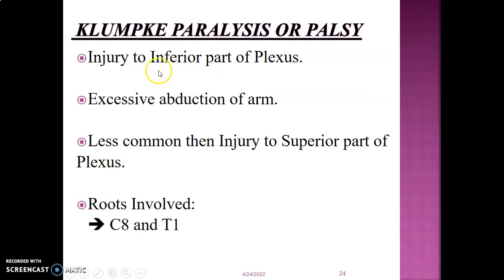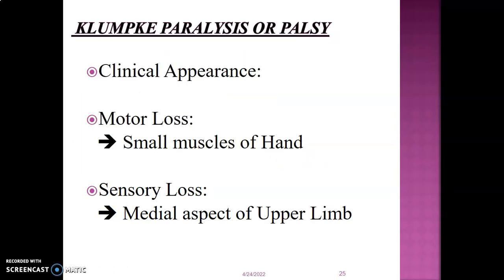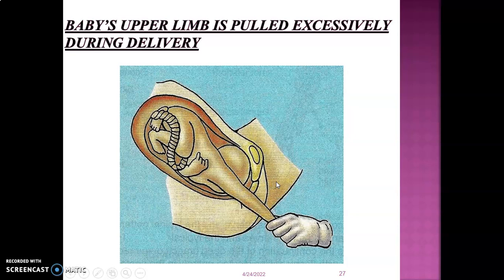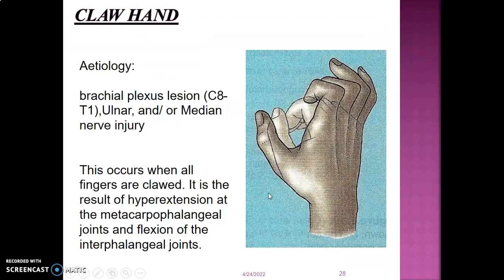Klumpke's paralysis results from injury to the inferior part of the brachial plexus involving C8 and T1, caused by excessive abduction of the arm — less common than Erb's palsy. There is motor loss to the small muscles of the hand (lumbricals and interossei) innervated by the ulnar nerve (C8–T1), along with sensory loss at the medial aspect of the upper limb. This can occur when catching a falling object or during delivery with the upper limb first, resulting in claw hand — hyperextension at the metacarpophalangeal joints and flexion at the interphalangeal joints.